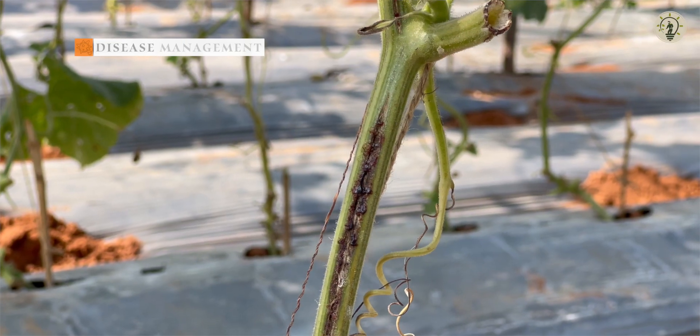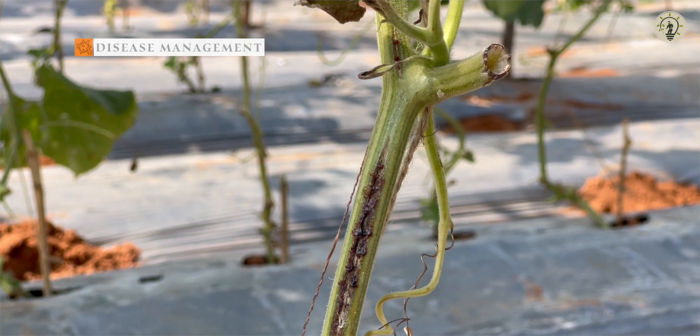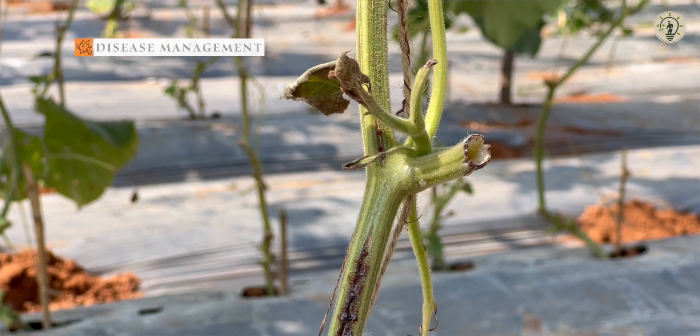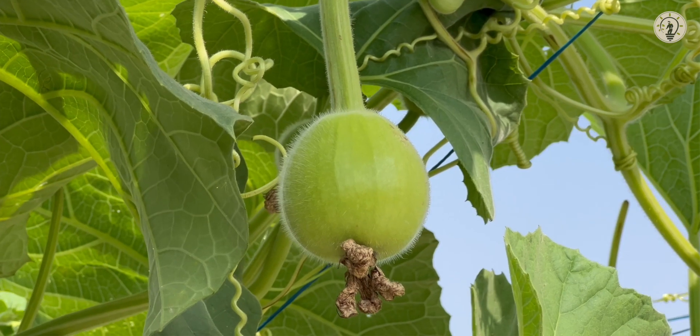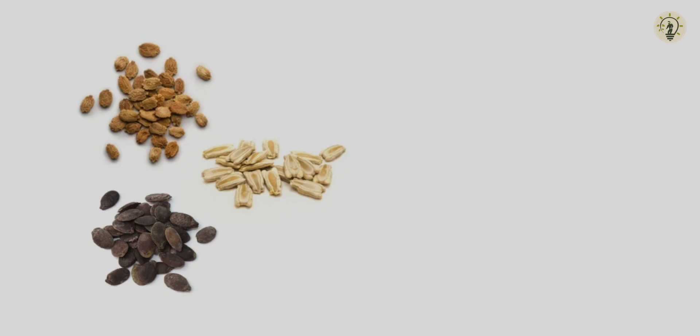A sequence of management plans must be initiated to control gummy stem blight or black rot disease. One source of GSB inoculum is the seed. As seeds can be infested without expressing symptoms, seeds from healthy fruits should be preferred. In alternate cases, seed treatment is necessary, in which disinfectants as liquid solutions are more effective than dry dust treatments.